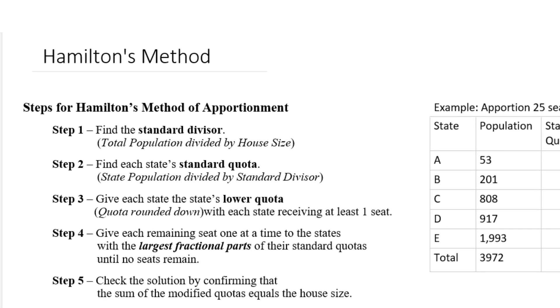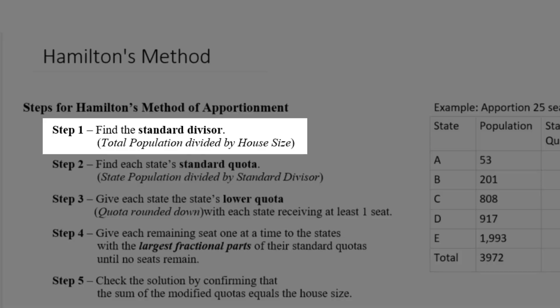There are certain terms you're going to see no matter what kind of apportionment method you're using. One of those terms is standard divisor — that's the total population divided by the house size. We're going to find that in step one of every single apportionment method.